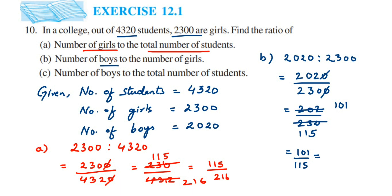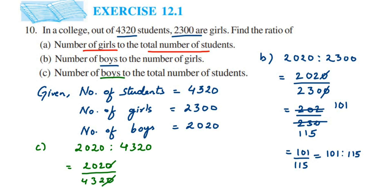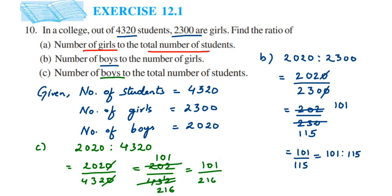We cannot simplify 101 over 115 further, so the answer for the second ratio — boys to girls — is 101 : 115. For the third question, the number of boys to total students is 2020 to 4320. Converting to a fraction: 2020 divided by 4320. Canceling zeros gives 202 over 432. Dividing both by 2 gives 101 over 216. This cannot be reduced further, so the answer is 101 : 216.